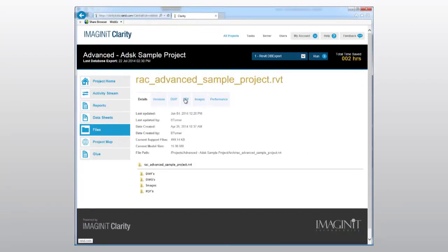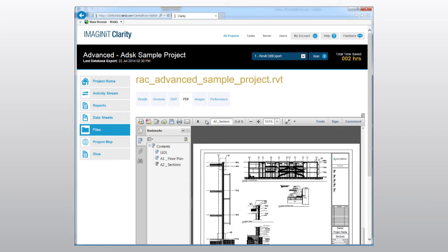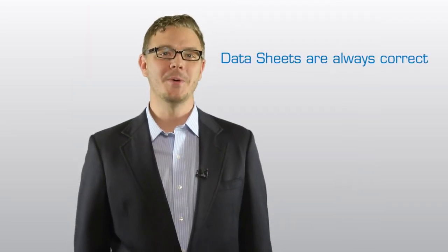Imaginate Clarity allows users without specialized Revit expertise to view, access, and update information in the model. And the best thing about this is that the data sheet is always correct.